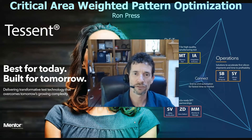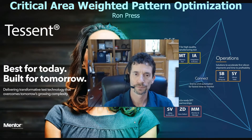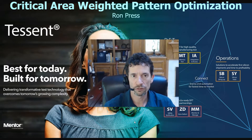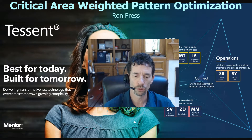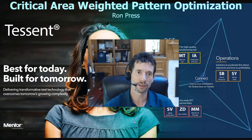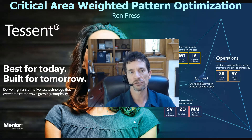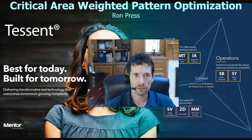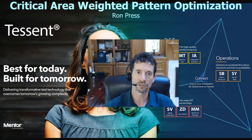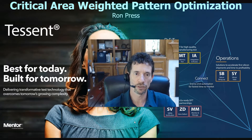Hello, this is Ron Press from Tessent Silicon Lifecycle Solutions. I'm going to talk to you about a new capability that I think is going to be interesting for many of you, especially if you struggle to pick the best patterns to apply in production, if you're truncating patterns, or you need to mix in some new patterns. This capability is called critical area weighted pattern optimization.